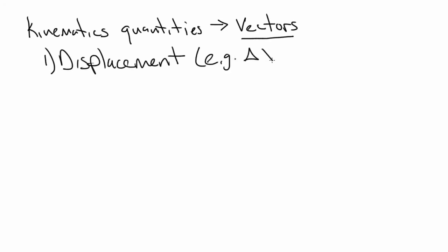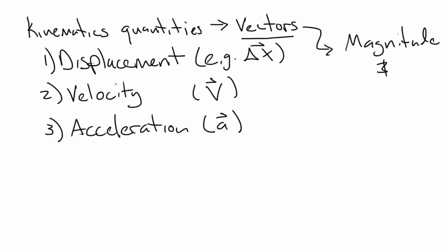In physics, the quantities that we use are displacement, velocity, and acceleration, and they are all vectors. They have a magnitude and a direction.